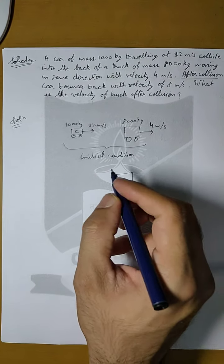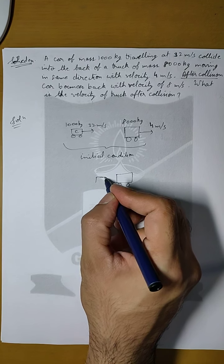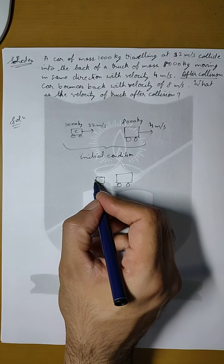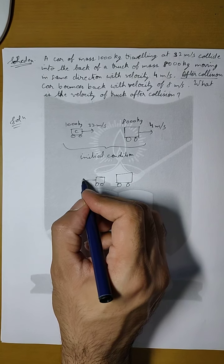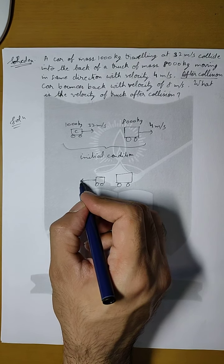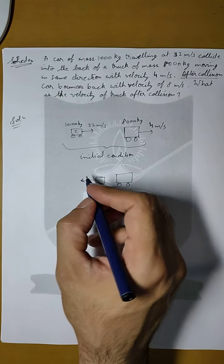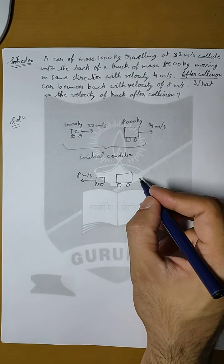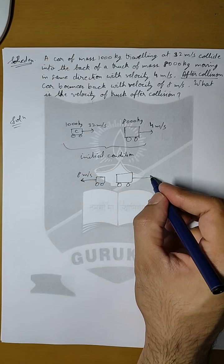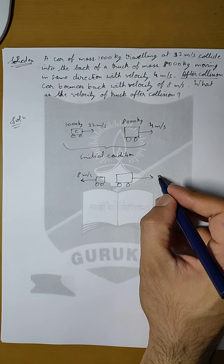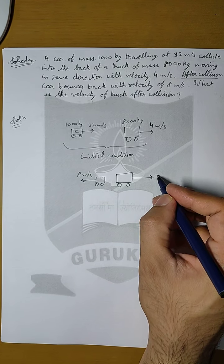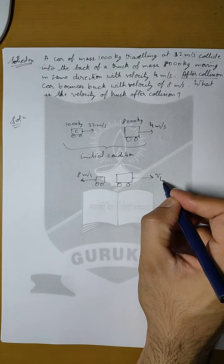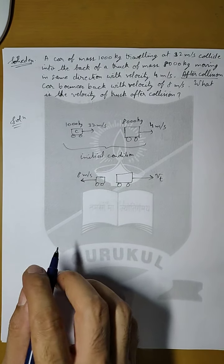The car has bounced back, meaning it has changed its direction. It has bounced back with a velocity of 8 meters per second. The truck moves ahead with some velocity that we have to find out. Let us call this the final velocity of the truck, Vt.